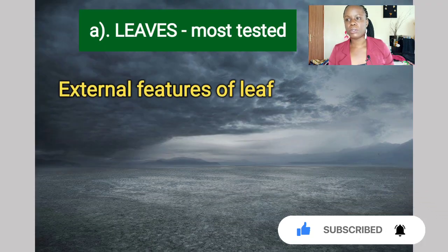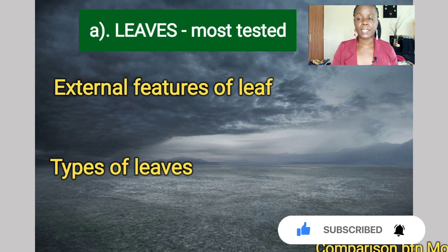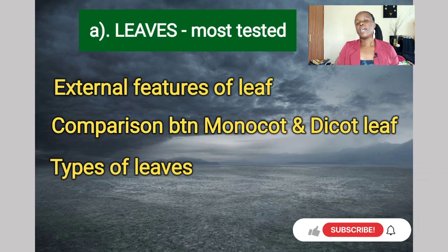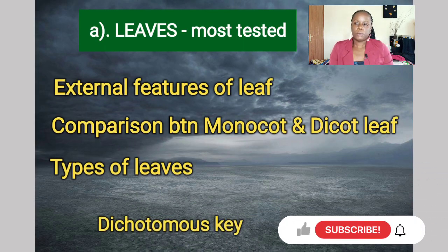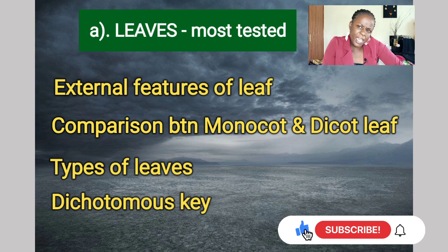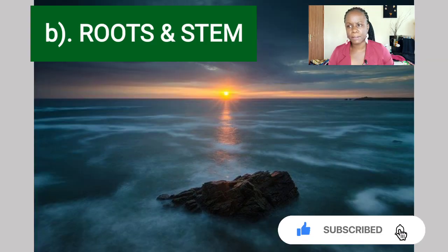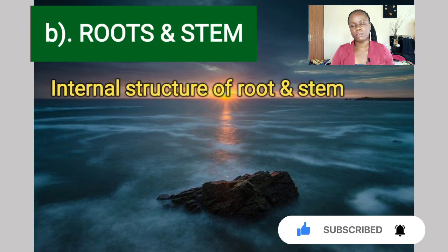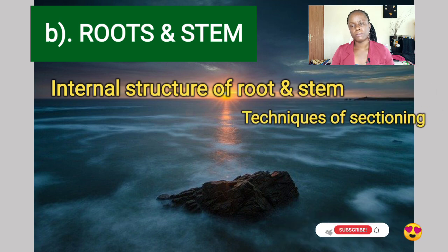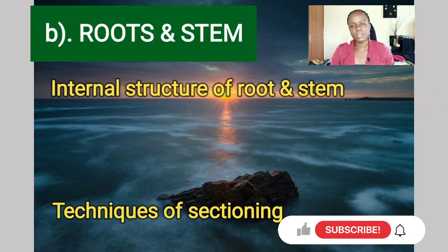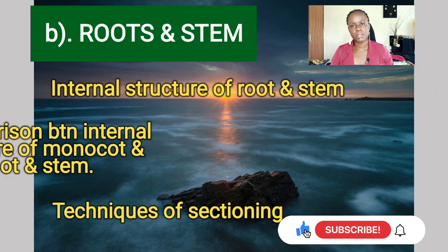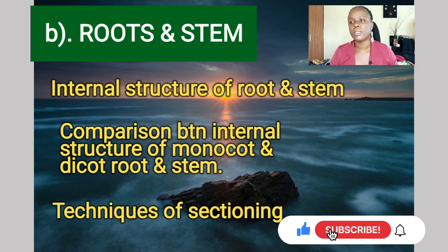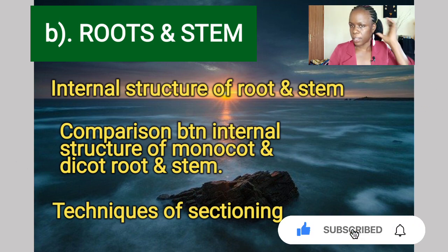In botany, leaves are the most tested topic — including comparison between monocot and dicot leaves, and even dicotomous keys. The other area is root and stem, and the areas to focus on are as shown in the video, including the internal structure of root and stem.